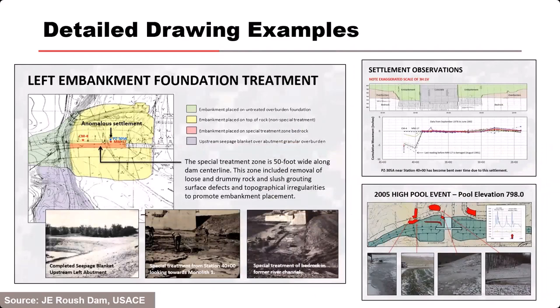This next drawing example comes from JE Routh Dam. There was anomalous settlement and concerns about karst potential — the observed settlement may have been a result of internal migration into karst rock. But looking at this drawing, the rock in the area of the settlement was exposed and had a special treatment area: a 50-foot wide zone where the rock was completely cleaned and treated with slush grout. Without the presence of a large defect in contact with the embankment, it's very unlikely that the observed settlement was a result of internal migration in the foundation.